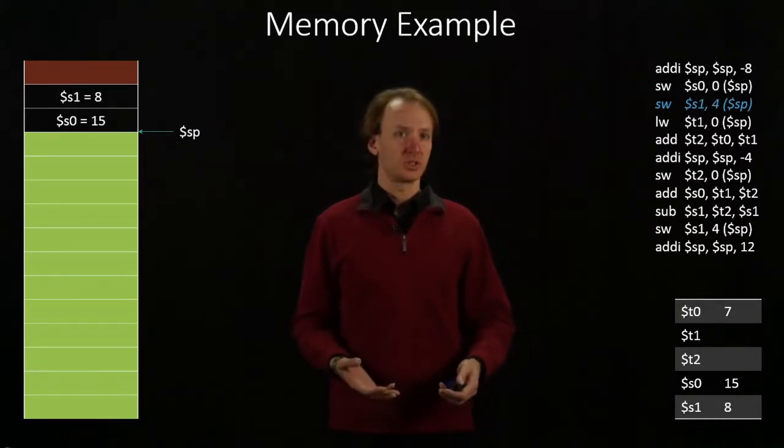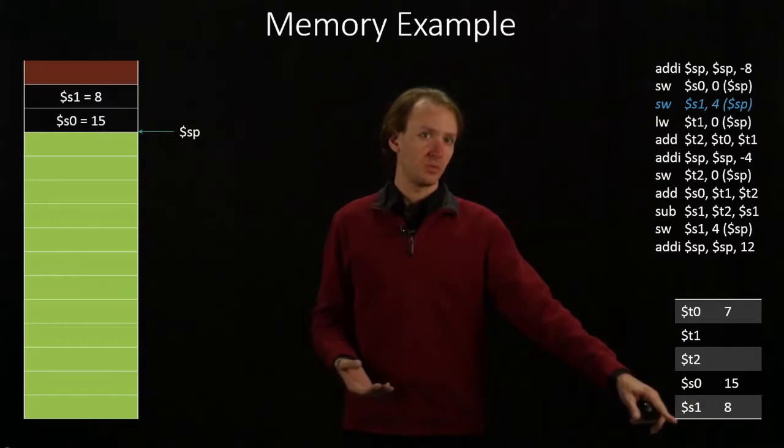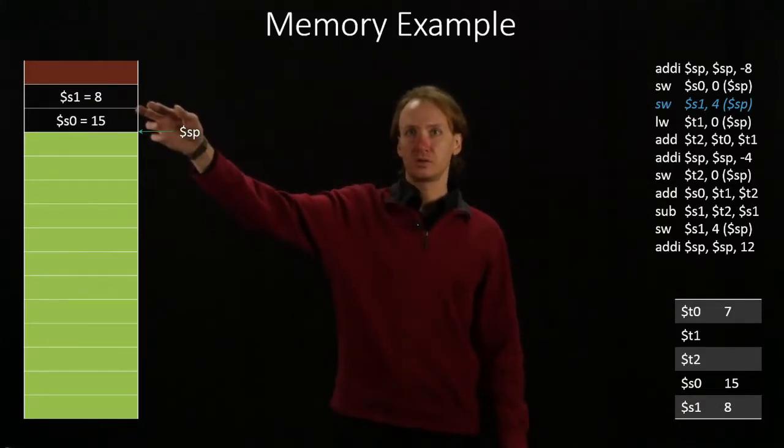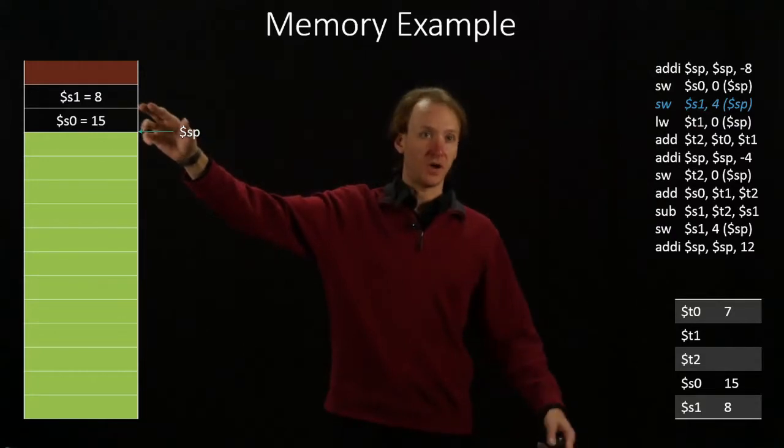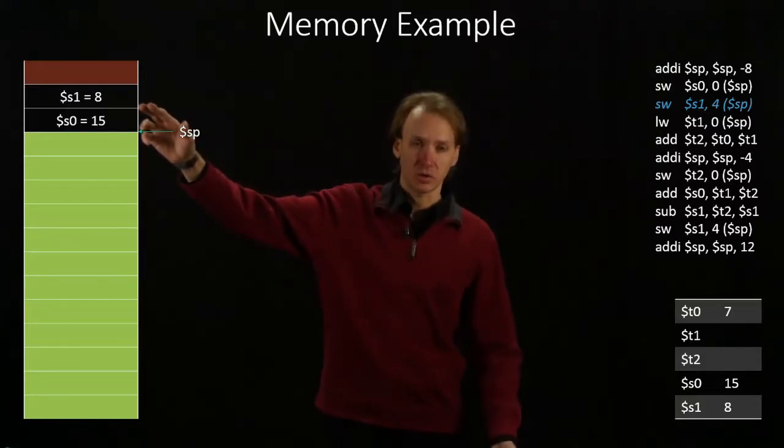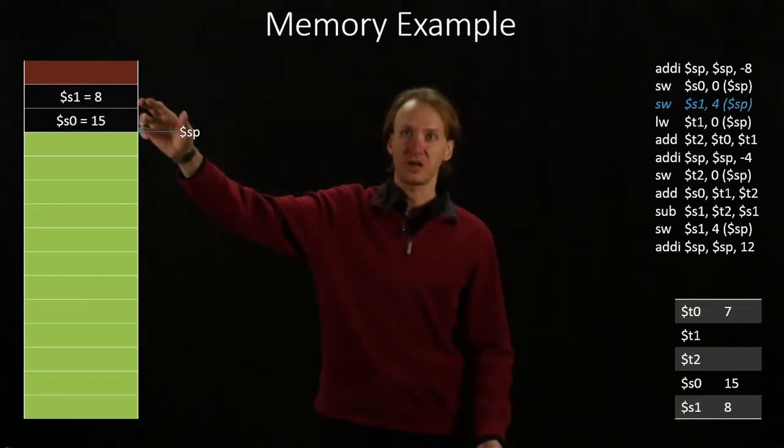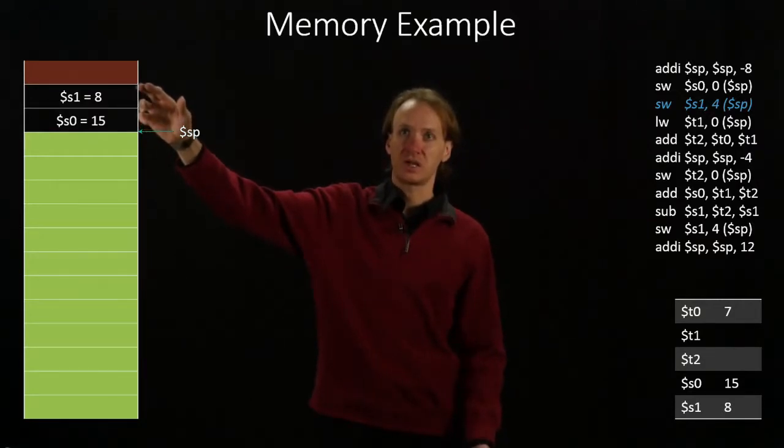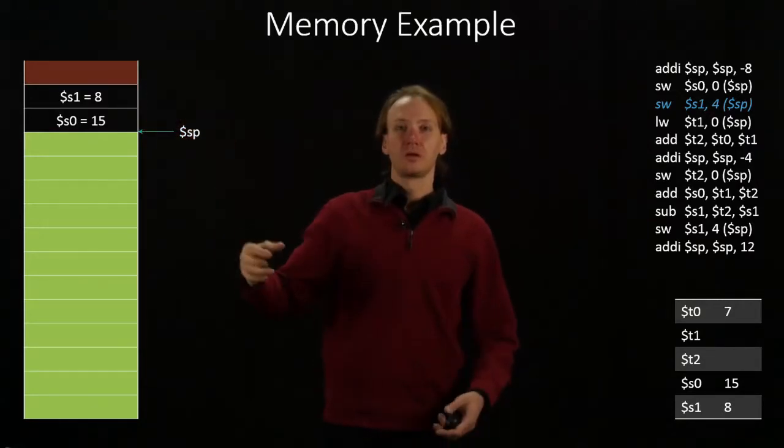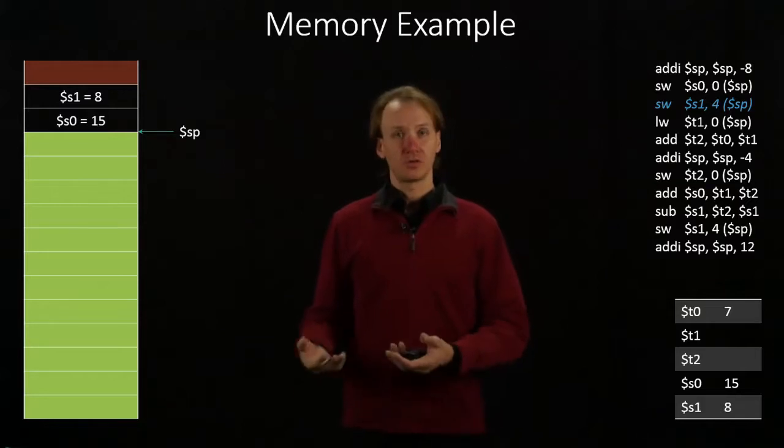Our next instruction says we should copy the data from S1 into stack pointer plus 4. So now that value of 8 goes into stack pointer plus 4, stack pointer plus 5, stack pointer plus 6, stack pointer plus 7. So those 4 bytes will be used to hold the value of 8.